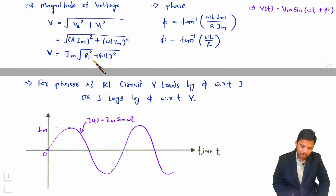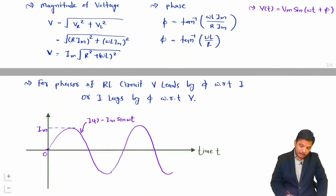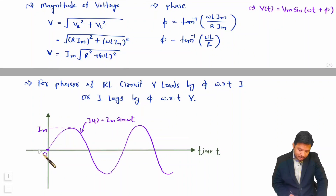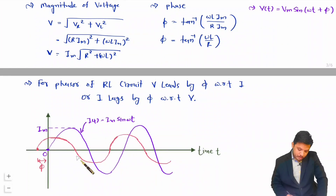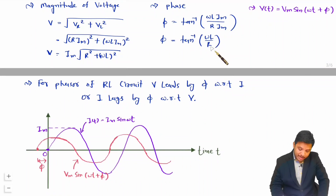In general, the voltage V = Vm·sin(ωt + φ), since voltage leads by angle φ, where Vm = Im·√(R² + (ωL)²). Leading by angle φ means the waveform is advanced by φ, so the sine signal starts φ angle earlier. Plotting Vm·sin(ωt + φ): both signals have the same frequency, but the voltage waveform is Vm·sin(ωt + φ) where φ = tan⁻¹(ωL/R) and Vm = Im·√(R² + (ωL)²).